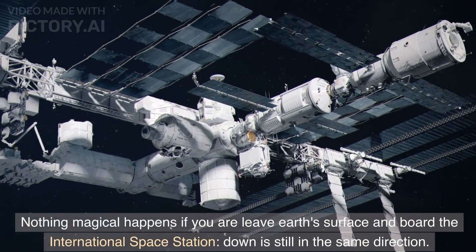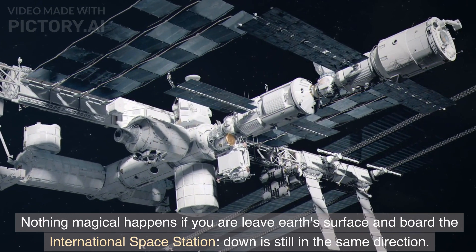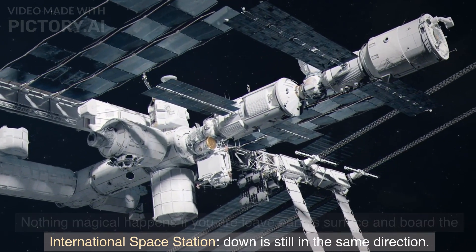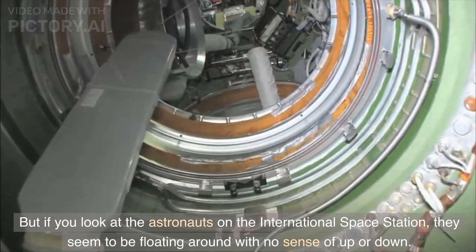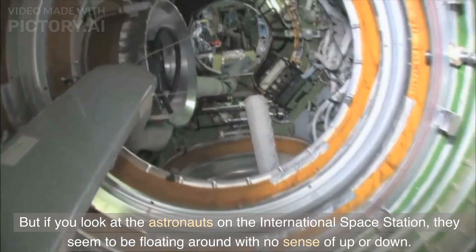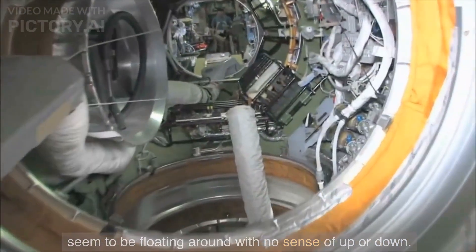Nothing magical happens if you leave Earth's surface and board the International Space Station. Down is still in the same direction. But if you look at the astronauts on the International Space Station, they seem to be floating around with no sense of up or down.